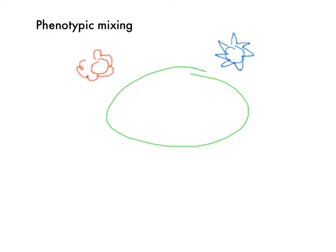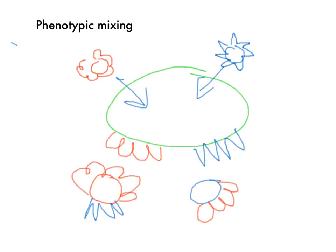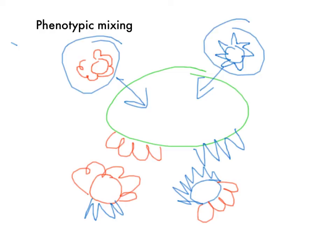Phenotypic mixing: there's no exchange of genetic material, but you have two viruses that infect a cell. You get nucleocapsids on the cell surface of two different types. Basically what happens is you get outpouching of these virions, and they randomly select different nucleocapsid proteins on the surface. So you get a phenotypic result combining both virions — they both kind of have each other's nucleocapsids. The important thing is that there is no genetic mixing, so the next generation of these viruses will have their own proper nucleocapsid coats. Phenotypic — it's just what you see. It's just surface deep.